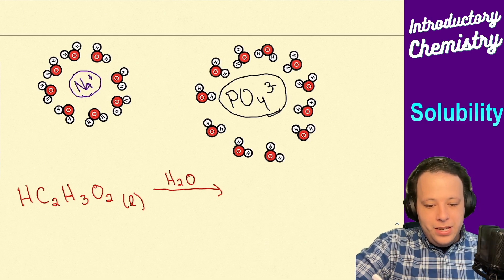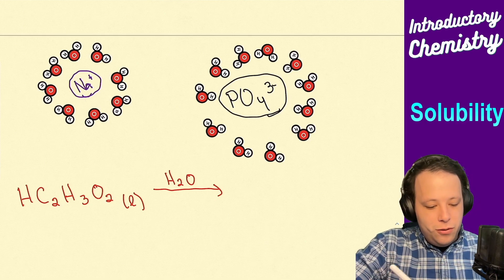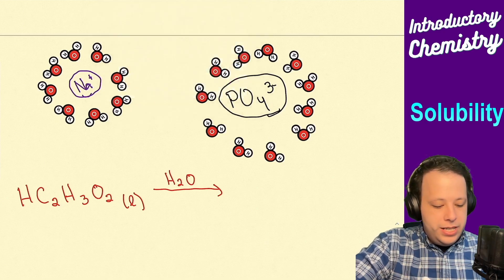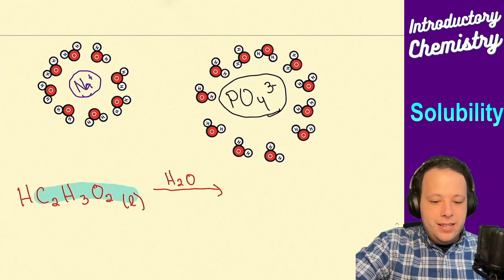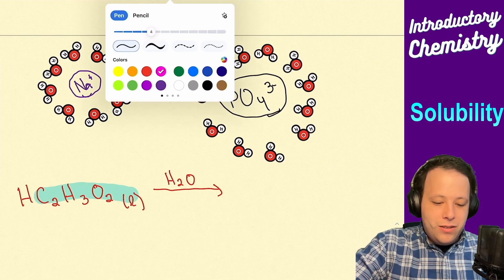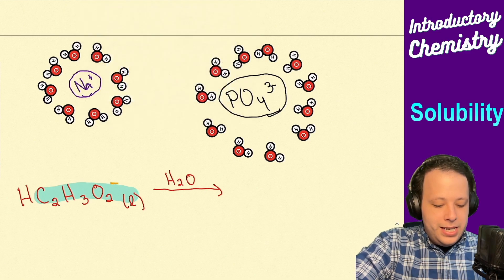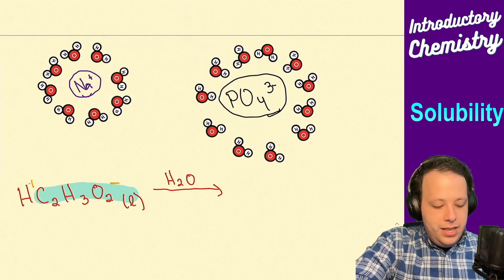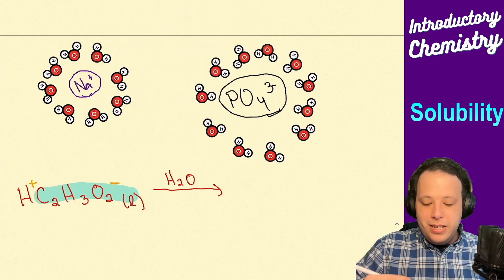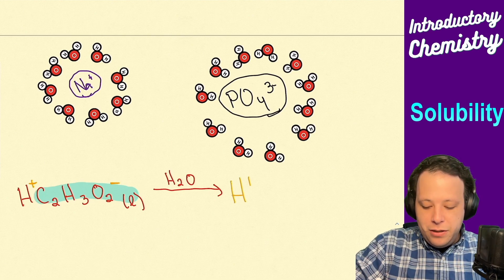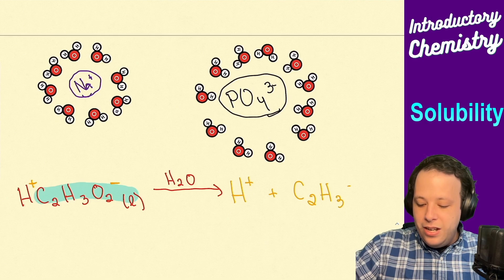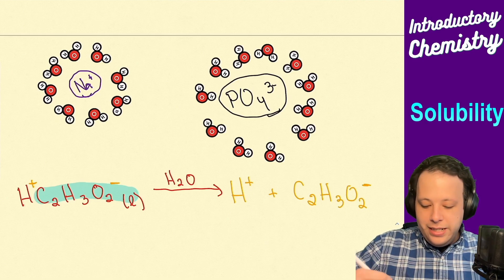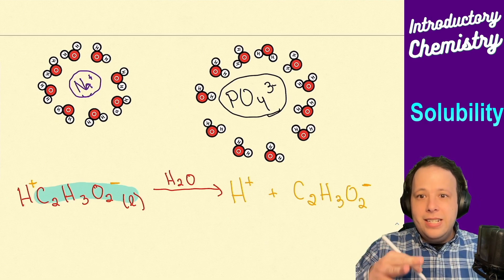One of them is the acetate ion, C2H3O2-, and then H+ on the other side. So it's going to be H+ plus C2H3O2-. Are these soluble? We're looking for either the hydrogen ion or the acetate ion on the chart.